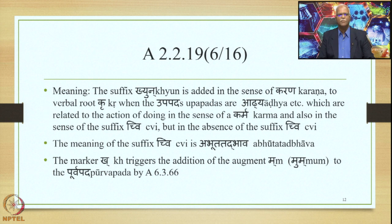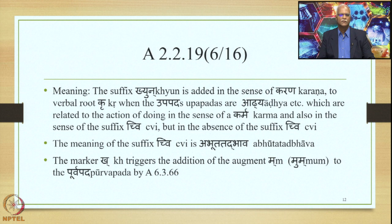The meaning of the suffix Chvi is Abhuta Tadbhava — something that is not there is now made to be. In the suffix Khyon, the marker Kh triggers the addition of the augment Ma (stated as Mum) to the Purva Pada, by Sutra 6.3.66.